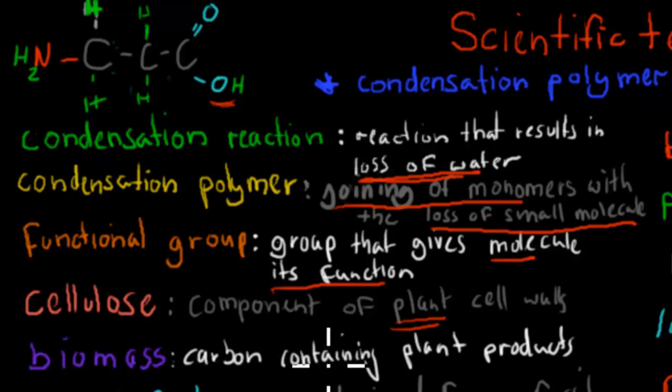Biomass, which is a carbon-containing plant product. So biomass, cellulose was an example of biomass, lignin is an example of biomass, but it's just produced by the plants, and it's got lots of carbon in it. Cellulose, again, would be that example.